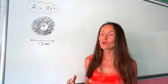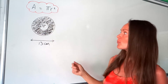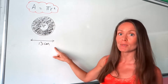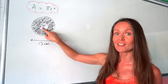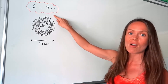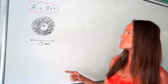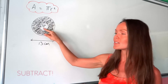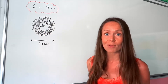In this question, we have to work out the area of the shaded ring. We've been given two circles: one large circle with a diameter of 13 centimetres, and a smaller circle inside with a radius of 2 centimetres. We're going to use the formula pi r squared to work out the area of circles. We'll work out the area of the big circle and then subtract the smaller circle to be left with the shaded area.